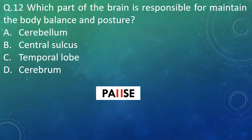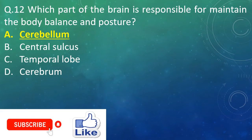Question 12: Which part of the brain is responsible for maintaining body balance and posture? Option A: cerebellum. Option B: central sulcus. Option C: temporal lobe. Option D: cerebrum. And the right answer is Option A — cerebellum.